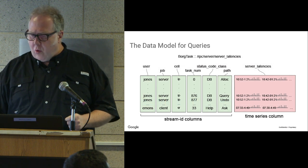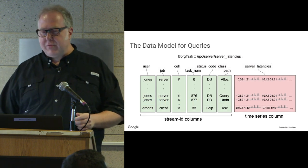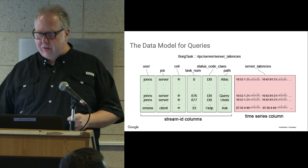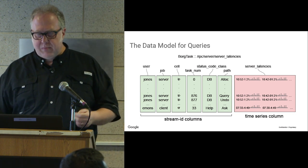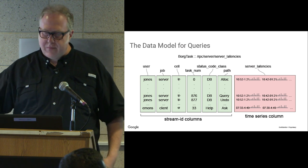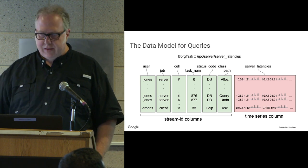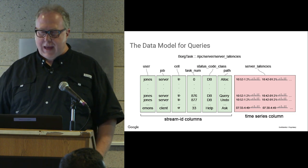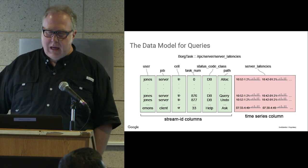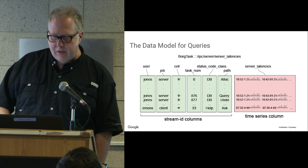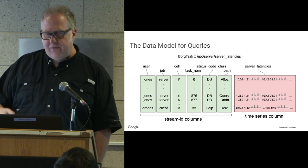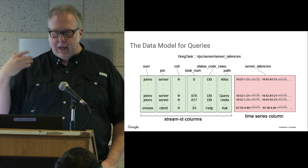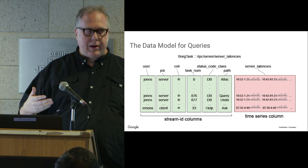From a query perspective, these streams are gathered together into tables for each target schema and metric pair. This gives a specific structure: columns from the targets, columns from the metric fields, and then a column for the actual time series data. It looks like a relational table. This is physically distributed across all zones and leaves, but logically, from the point of view of someone querying our system, they just see this table.